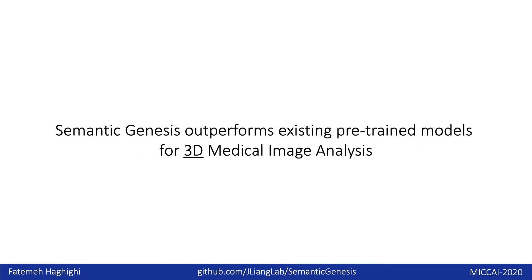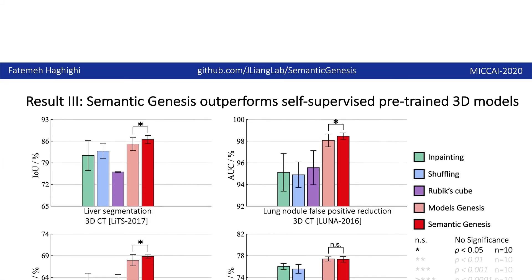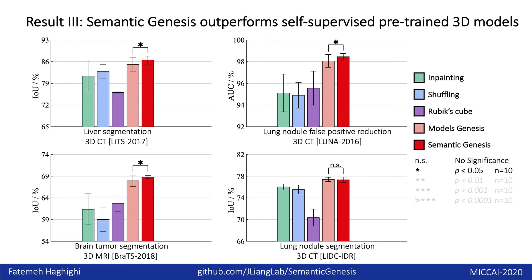Our extensive experiments demonstrate that semantic genesis outperforms existing pre-trained models for 3D medical image analysis. We compared semantic genesis with recent self-supervised methods, including inpainting, shuffling, Rubik's cube, and models genesis. Semantic genesis outperforms all methods across four target tasks, and the statistical analysis shows semantic genesis outperforms the previous state-of-the-art method.